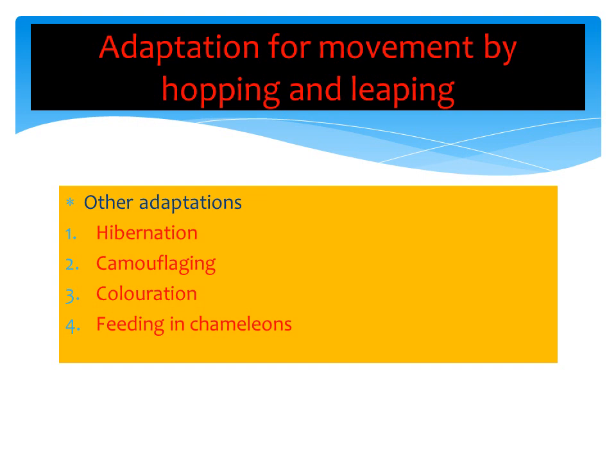Adaptation for movement by hopping and leaping: Animals which move by hopping or leaping have very strong muscular hind legs. This adaptation pushes the animal forward during hopping. The front legs are less muscular and help in landing. Examples of animals that move by hopping or leaping are frogs, toads, kangaroos, grasshoppers, crickets, and locusts.